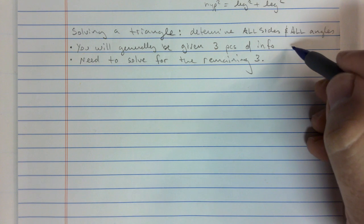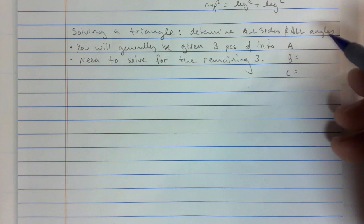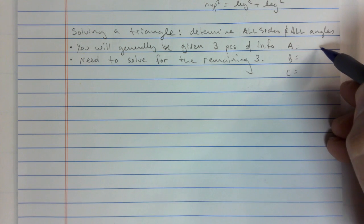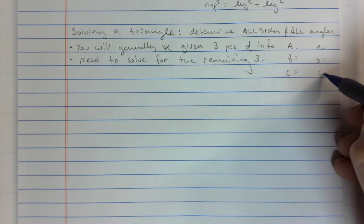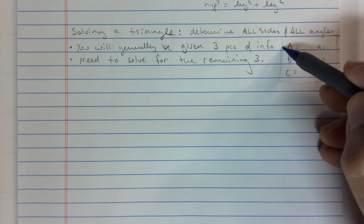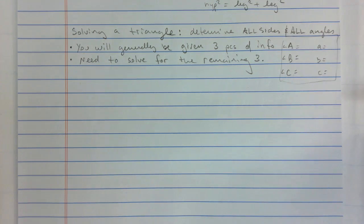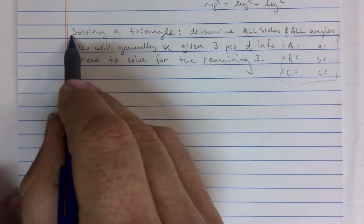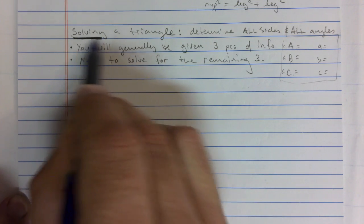So if you have triangle A, B, C, you're also going to have sides A, B, and C. There will be three angles and three sides, and you need to know all six when solving a triangle. Solving a triangle is very important here.